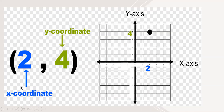The first coordinate is also known as the x-coordinate (abscissa). To plot the point (2, 4) on the Cartesian coordinate plane, find x = 2 on the x-axis, then find y = 4 on the y-axis. The point of intersection at 2 and 4 is the plotted point.